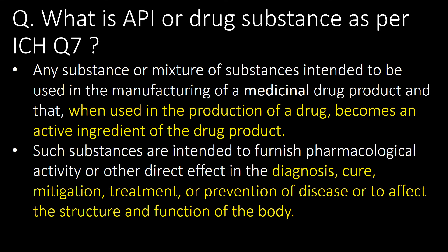Basic and important question: what is API or drug substance as per ICH Q7? Any substance or mixture of substances intended to be used in the manufacturing of a medicinal drug product, and that when used in the production of a drug becomes an active ingredient of the drug product. Such substances are intended to furnish pharmacological activity or other direct effect in the diagnosis, cure, mitigation, treatment, or prevention of disease, or to affect the structure and function of the body.